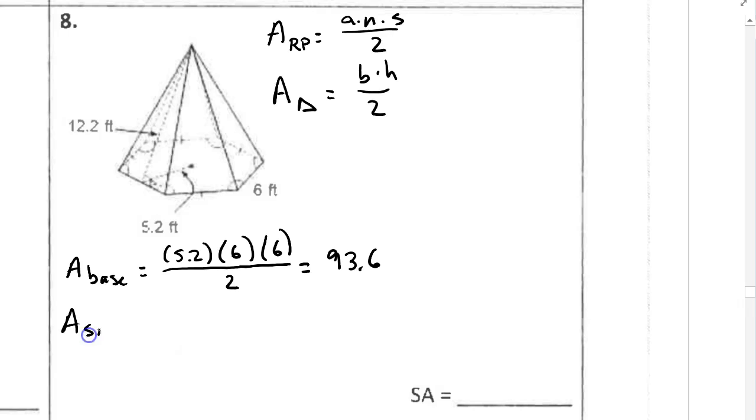And then the area of the other sides, those are all equal, congruent isosceles triangles. So they have a base of 6. And here's the dimension that shows us the height of those triangles. So that's 12.2 divided by 2.